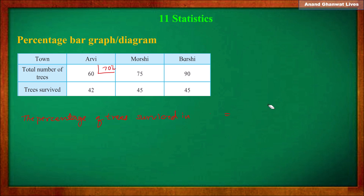Now let us calculate trees survived in Morshi. Total number of trees in denominator is 75, and in the numerator trees survived is 45, into 100. Calculating: 45/75 × 100 = 60. So 60% of trees survived in Morshi. Now let us count the percentage of trees survived in Barsi.